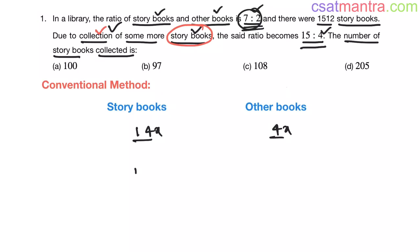After collection, we have storybooks as 15x and other books as 4x. The number of other books in both cases — before collection and after collection — remains the same. Whenever a problem of this type is asked, make sure the problem fits into the given conditions. In yesterday's daily dose, it was given that 3 vessels are of equal value; we made our problem fit into those conditions. The link to that problem is given below in the description.